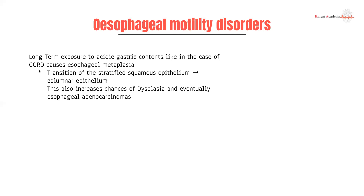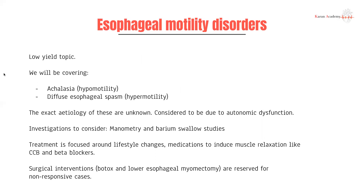Esophageal motility disorders are a lower-yield topic with two important conditions: achalasia and diffuse esophageal spasm. The two are similar in how they present but very different in what's actually going on. Achalasia is where your lower esophageal sphincter fails to open up — it's a hypomotility issue with increased autonomic supply to the LOS. As you can imagine, the person eats food and it gets stuck at that lower esophageal sphincter, presenting with symptoms.